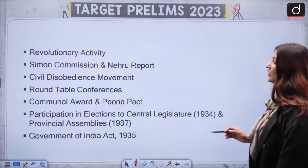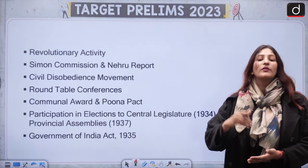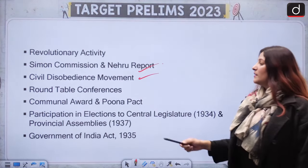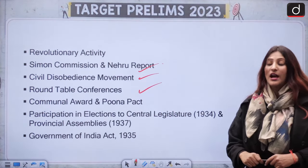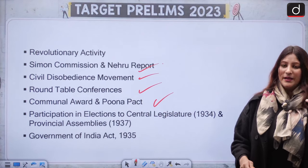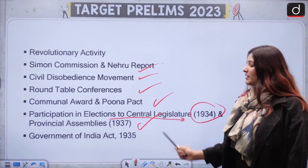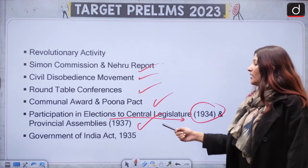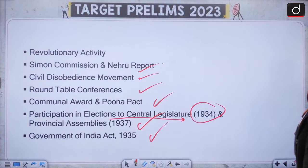Revolutionary activists — who were they, why did they act, what was the result. Simon Commission, Nehru Report, Civil Disobedience Movement, Round Table Conferences — who attended and what was the outcome. The Communal Award and Poona Pact — signed between whom. Participation in elections to central legislature and provincial assemblies, which party remained dominant, and how the Government of India Act 1935 tried to reform the structure.